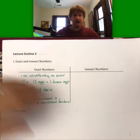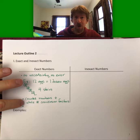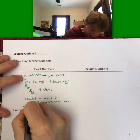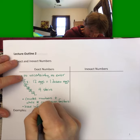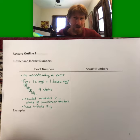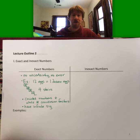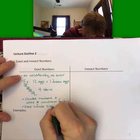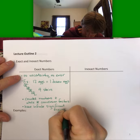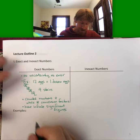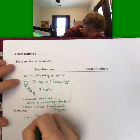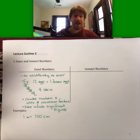An important point about exact numbers: counted numbers and whole numbers have infinite significant figures. We haven't talked about significant figures yet, but when we do, refer back to this. One meter equals 100 centimeters is a version of counted numbers — you'd be counting exactly 100 centimeters in a meter.